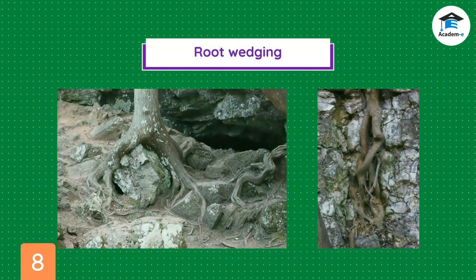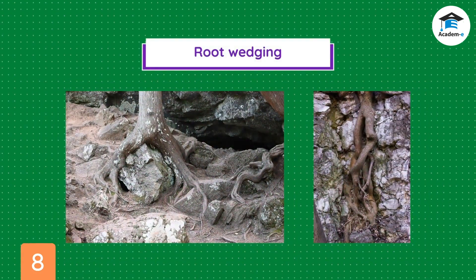As trees grow taller, their roots grow bigger. To absorb more soil nutrients, roots maximize joints or fractures on the hard ground or rocks, breaking into them to reach the nutritious parts of the soil. This kind of physical weathering is called root wedging.